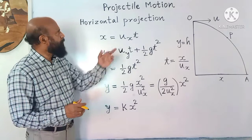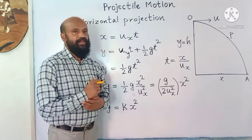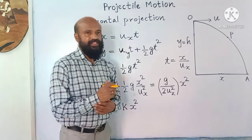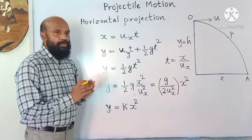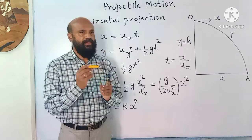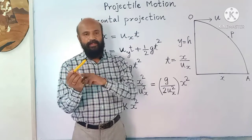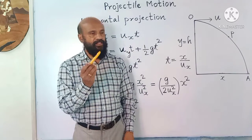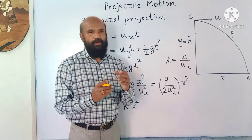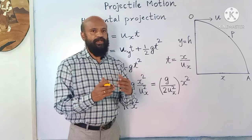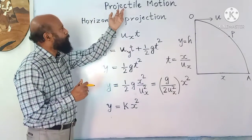In this video I am going to explain projectile motion. If an object is thrown with an initial velocity and then it is allowed to move under the action of gravity, then it is known as projectile motion. There are two types: horizontal projection, where the object is given a velocity in the horizontal direction, and oblique projection, where it is thrown at a particular angle with the horizontal. Examples include a ball or stone thrown from the window of a moving train, a bullet fired from a rifle, or a ball thrown in any direction.